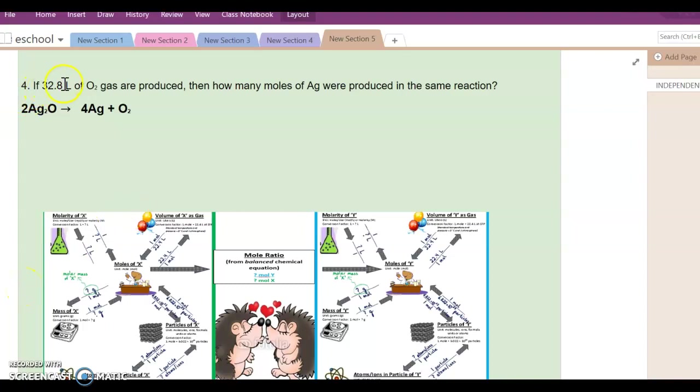Okay, if 32.8 liters of O2 gas are produced, then how many moles of Ag were produced in the same reaction? Well, let's figure out where we are and what we're trying to get to. So where we are, we're in liters of a gas, starting here where it says volume is a measurement. Where are we trying to get to? Moles. We're trying to get the moles of something different.